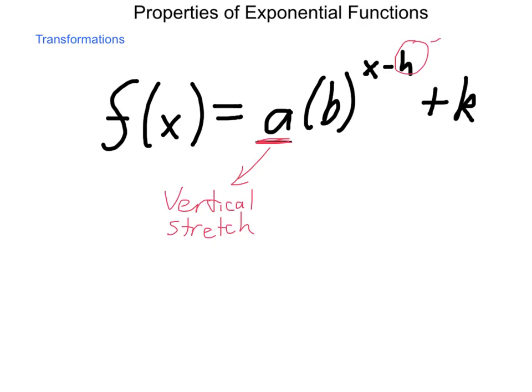h is our horizontal shift. This will move our function right and left across the x-axis, and basically comes down to the same thing we've worked with in other forms. What does it take to make this group, the exponent, x minus h, 0?